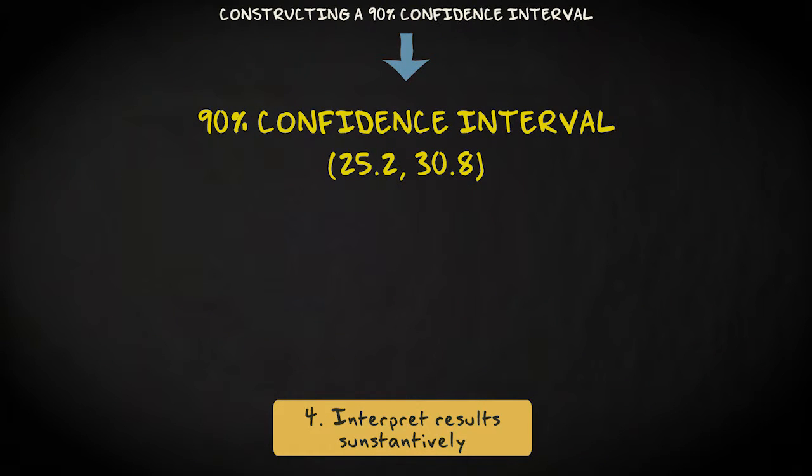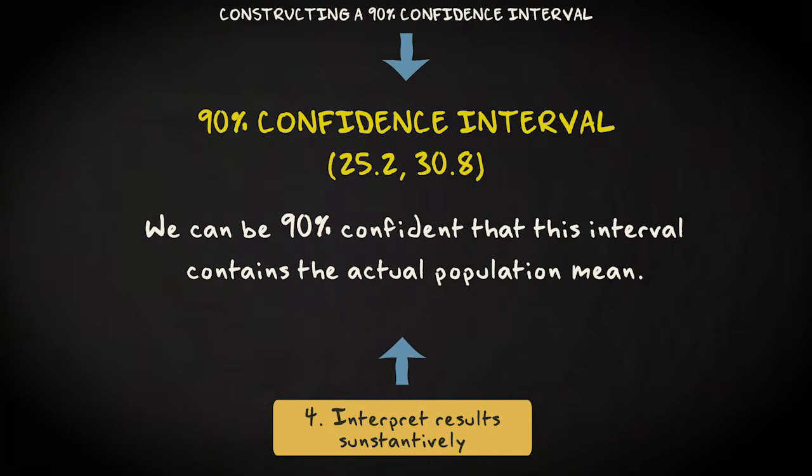The 90% confidence level thus ranges from 25.2 to 30.8. We can be 90% confident that this interval contains the actual population mean.